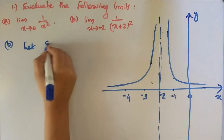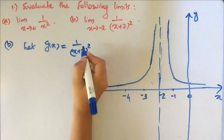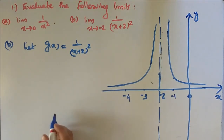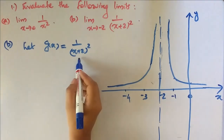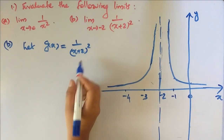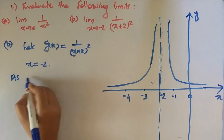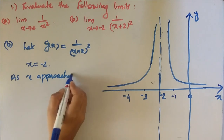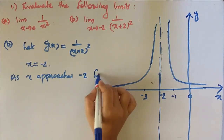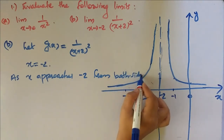Let g(x) equal to 1 by (x plus 2) all squared. Consider the behavior of g(x) = 1/(x+2)² near x equal to minus 2. As x approaches minus 2 from both sides.